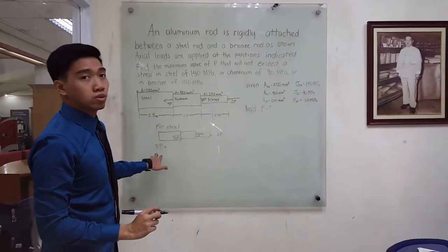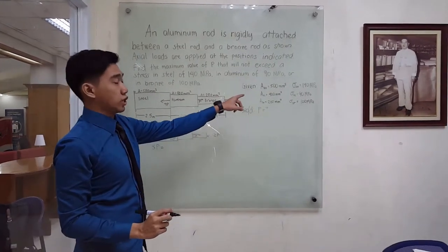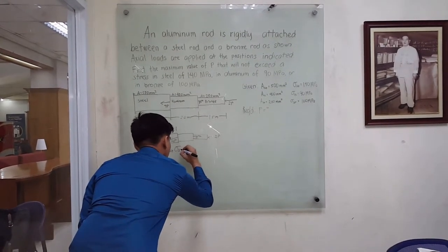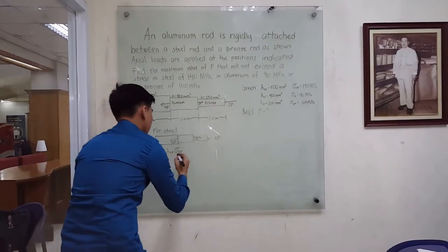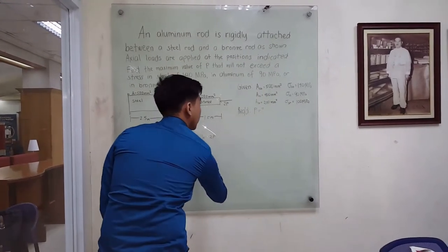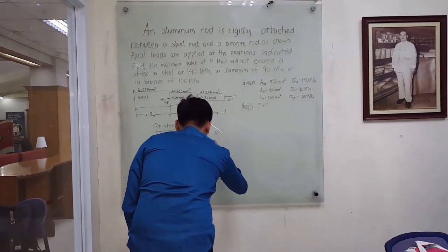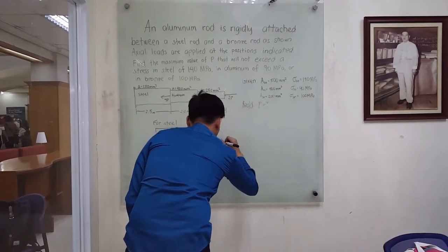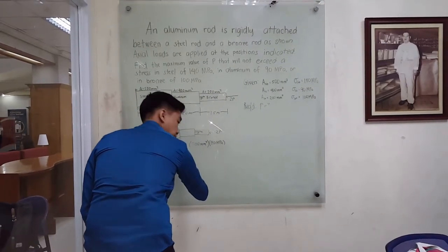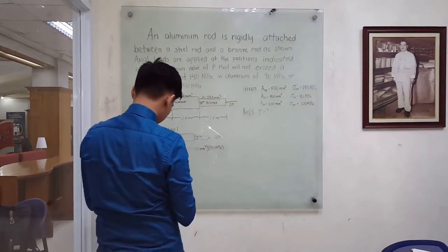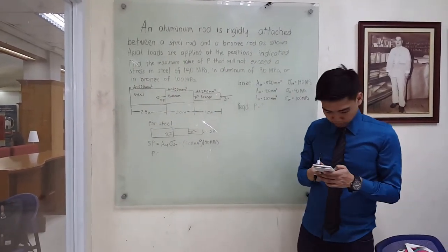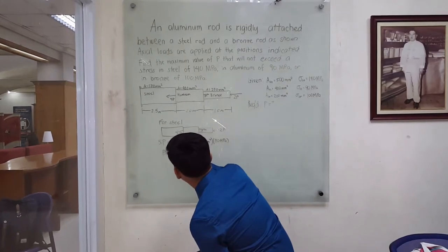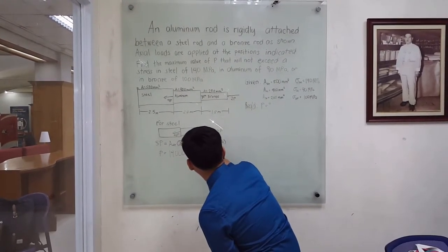This is equal to the product of the area and the stress. So 5P equals 500 square millimeters times 140 MPa. The value of P is 14,000 Newton or 14 kilonewtons.